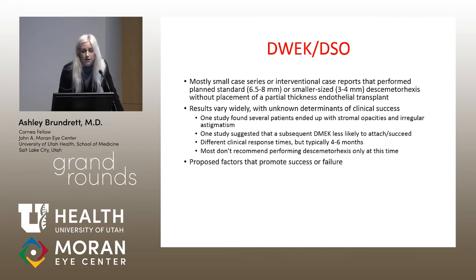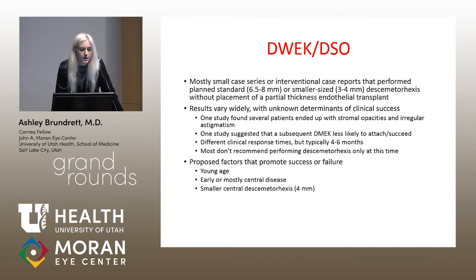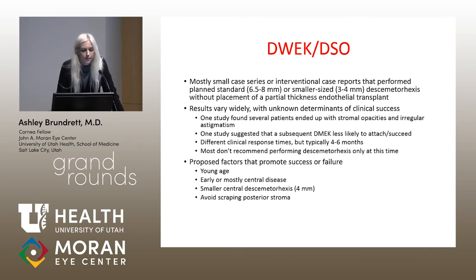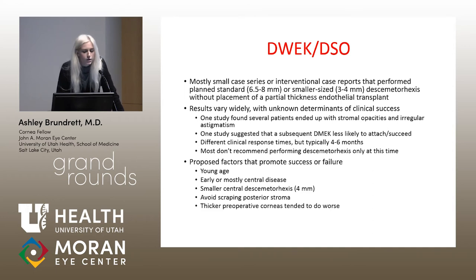Most studies at this time don't recommend doing just descemetorhexis until more studies confirm what works and what doesn't. Proposed factors promoting success include young age, earlier or mostly central disease, a smaller descemetorhexis of about three to four millimeters, and avoiding scraping the posterior stroma — roughening it was felt to prevent endothelial cell migration. For failure, thicker preoperative corneas tended to do worse.